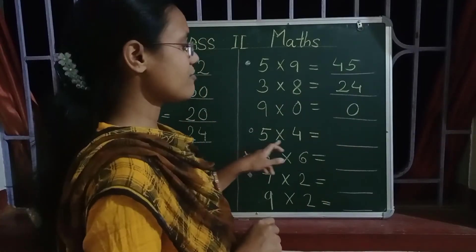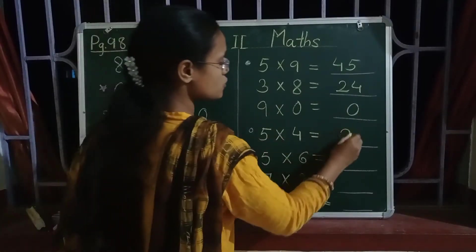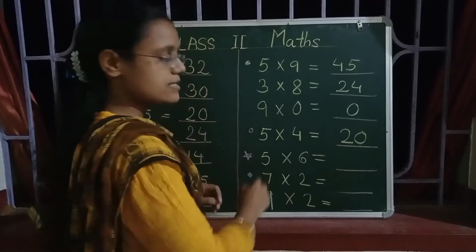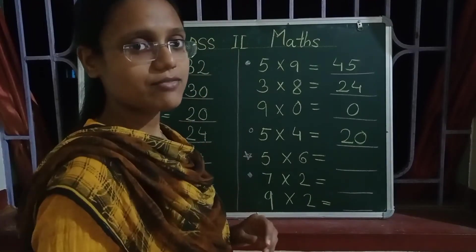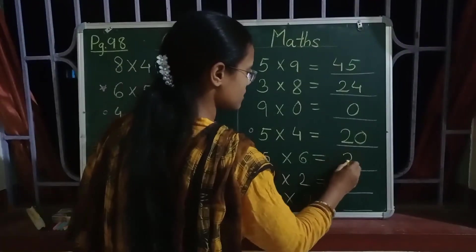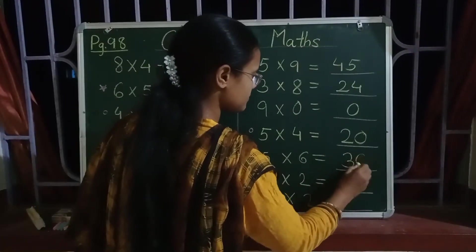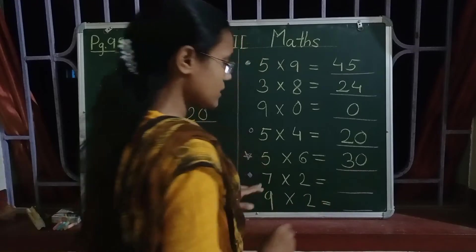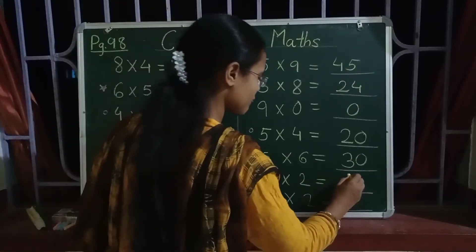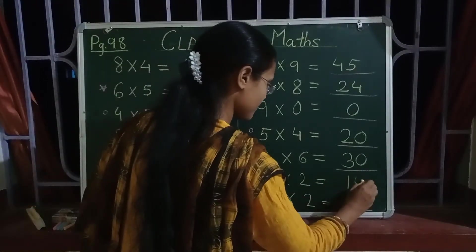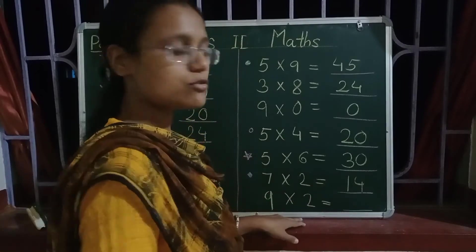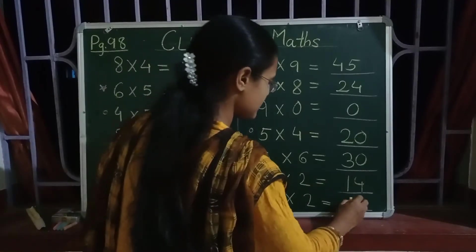5 into 4 — 5 fours are 20. 6 into 5 — 6 fives are 30. 7 into 2 — 7 twos are 14. And 9 twos are 18.